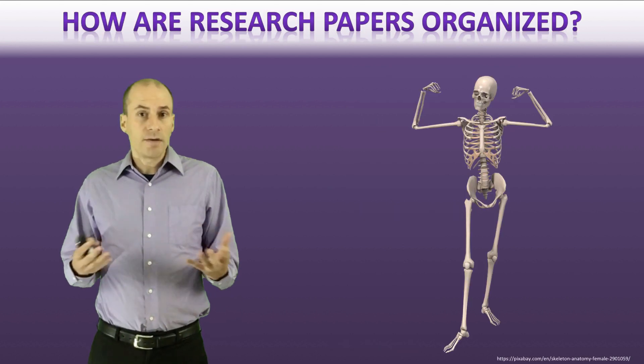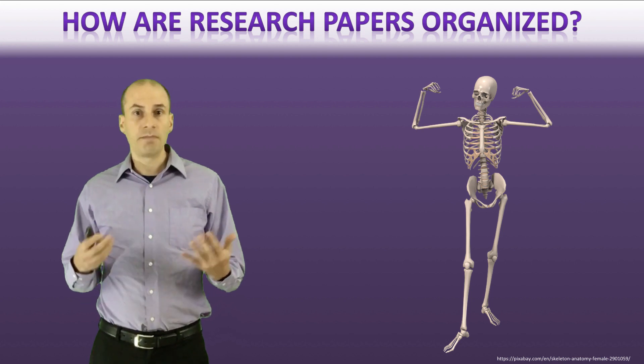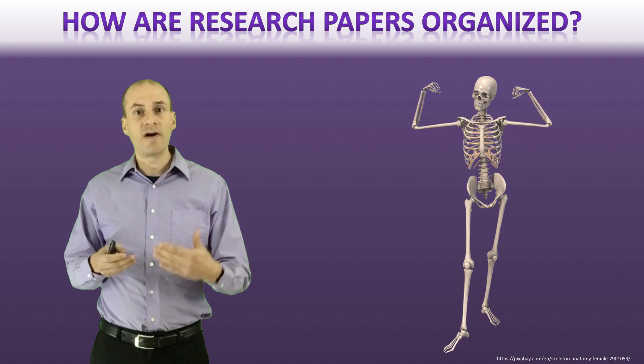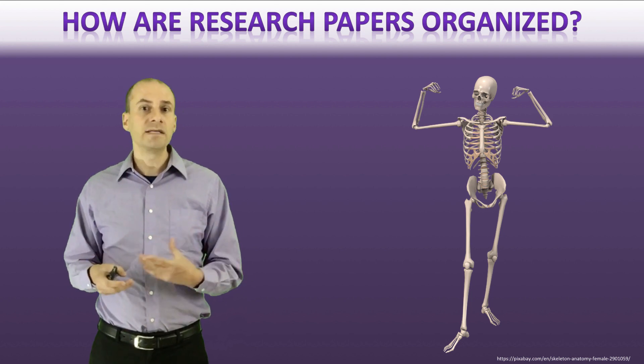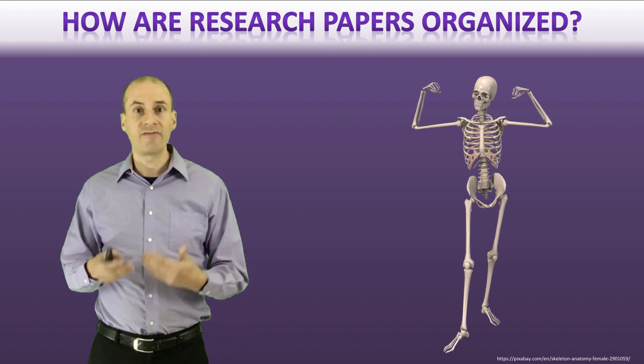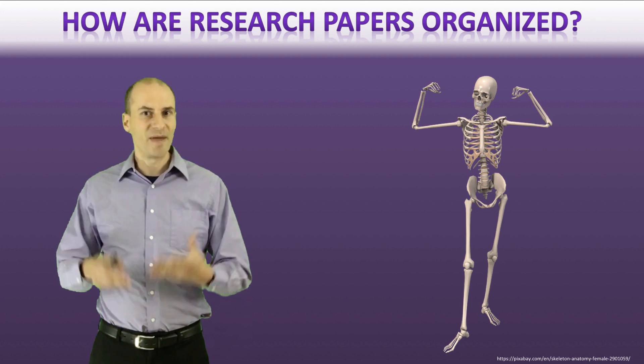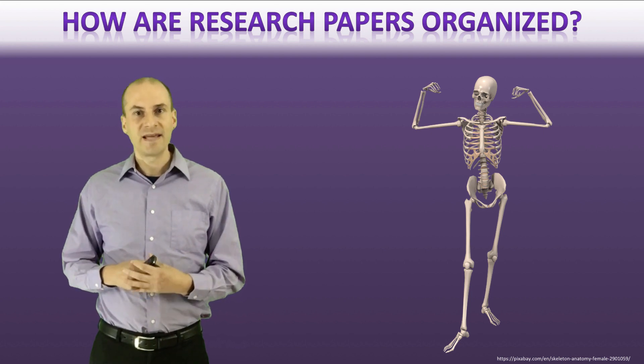All right. So that's a basic anatomy of how a paper is set up. This is going to be really useful to you because being able to go and quickly find the different types of information you need relies on you actually knowing where that different information can be found. So there it is, the basic anatomy of a research paper. Thank you for listening and take care.